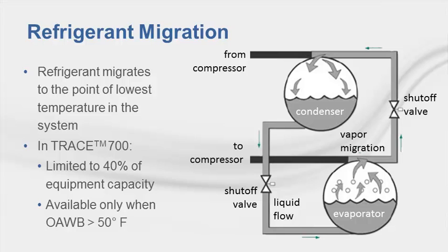Finally, there's refrigerant migration. When returning tower water is colder than the chilled water temperature, refrigerant pressure in the condenser is lower than that of the evaporator, driving the boiled-off vapor into the condenser. Once the refrigerant condenses, it flows back into the evaporator by gravity so compressor operation is not necessary. When modeling refrigerant migration in TRACE 700, keep in mind that the free cooling available is limited to 40% of equipment capacity, and if the cooling load cannot be met by refrigerant migration, the load is satisfied using the conventional cooling cycle.